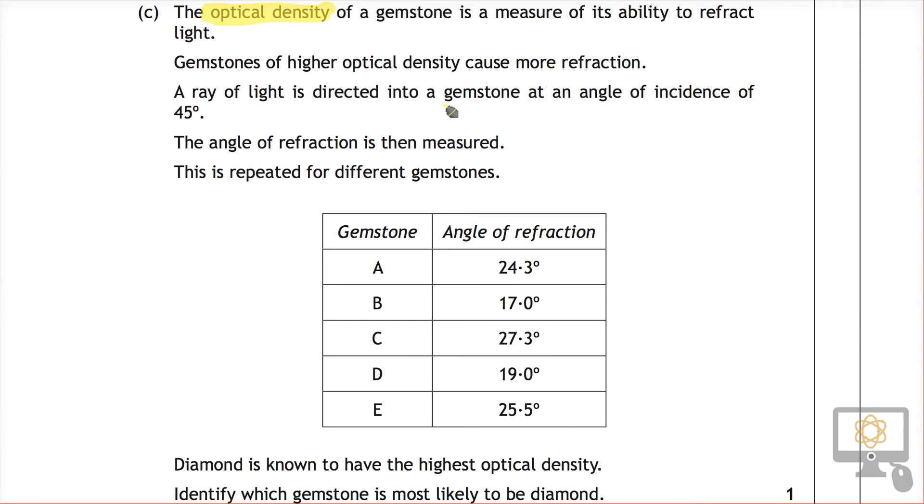This is repeated for different gemstones and so we have a table with five different gemstones and their angles of refraction based on an angle of incidence of 45 degrees. You can see that the angle of refraction is different for everyone, which means that the optical density is different for every gemstone.